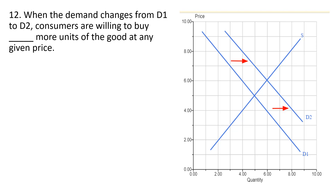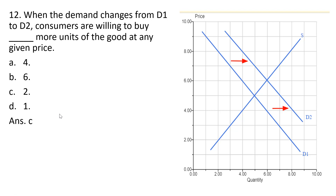When the demand changes from D1 to D2, consumers are willing to buy blank more units of the good at any given price. At a price of $8 with the old demand, consumers are willing to buy 2 units; with the new increased demand, consumers are willing to buy 4 units — a 2 unit increase. At a price of $7 with the old demand, consumers would buy 3; with the new higher demand off D2, consumers would buy 2 more units, or 5. The correct answer is C — 2 more units at any given price.